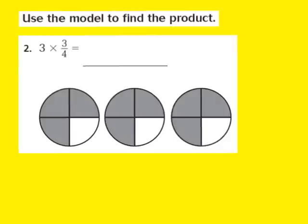Now I'm going to look at the numerator of my fraction, and that numerator is a 3. So what happens next is we need to shade in 3 of those 4 equal parts. For each one of these circles that is modeled and shaded, there are 3 out of 4 parts shaded in. So that means I have 3 fourths being modeled in each of the 3 circles.